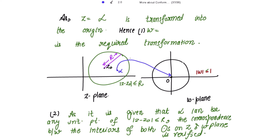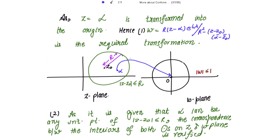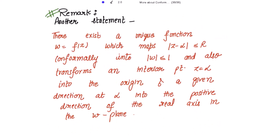Hence w = r(z - α)e^(iλ) / (r² - (z - z₀)(ᾱ - z̄₀)) is the required transformation proved by the theorem. Since α can be any interior point of |z - z₀| ≤ r, the correspondence between the interiors of both circles in the z-plane and w-plane is also verified.